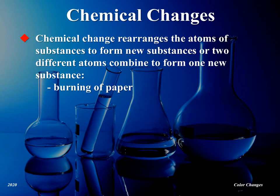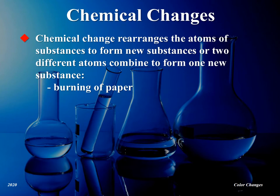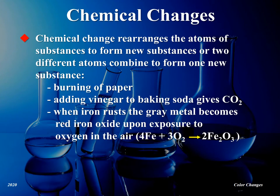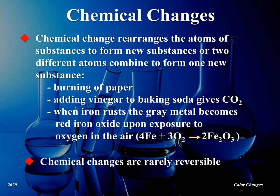In a chemical change, the atoms of substances rearrange to form new substances, or two different atoms combine to form one new substance. Some examples include the burning of paper, adding vinegar to baking soda resulting in the formation of carbon dioxide, and when iron rusts — the gray metal becomes red iron oxide upon exposure to oxygen in the air, as shown in this equation. Chemical changes are rarely reversible.